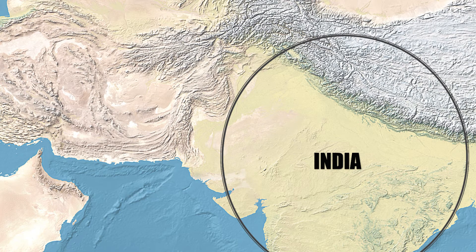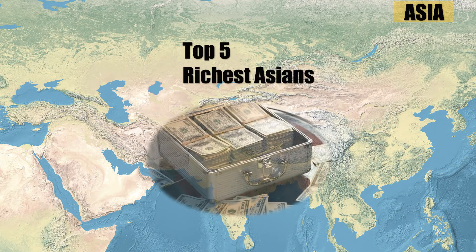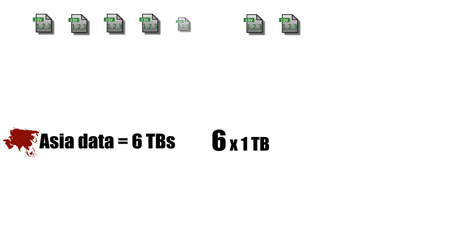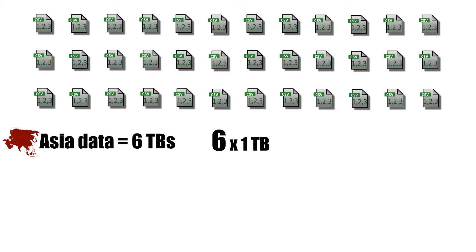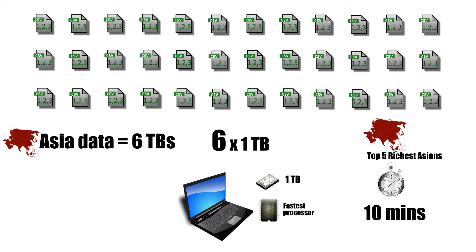The problem arises when instead of India we want to find the top five richest Asians. Asia's data is now six terabytes — six times the data of India. Our goal is still to find the top five richest Asians in 10 minutes. We have the same laptop with one terabyte of hard disk and the fastest processor. We can increase the hard disk by adding another disk to reach six terabytes, but what about the processor?